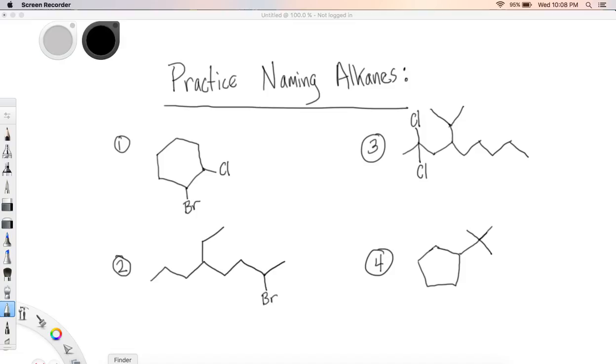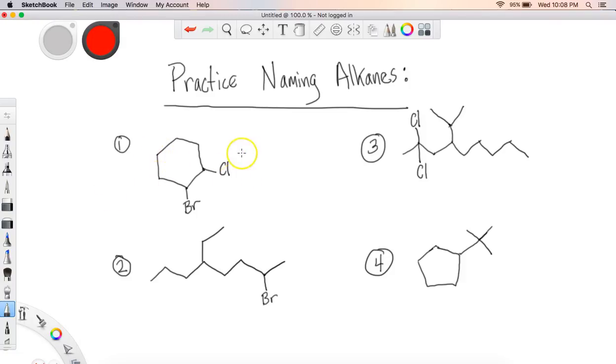Alright, welcome back everybody. So for the first compound, the parent chain would be a cyclohexane. Actually, I'll hold off on putting that so I have enough room. So the parent chain is going to be a cyclohexane. You have a bromo and a chloro right next to one another.